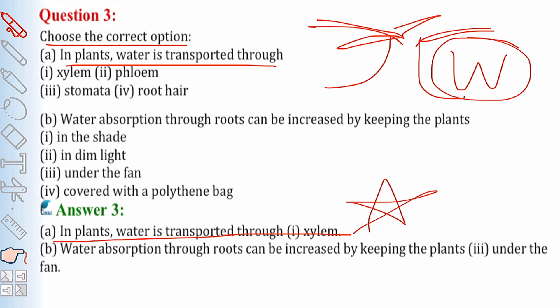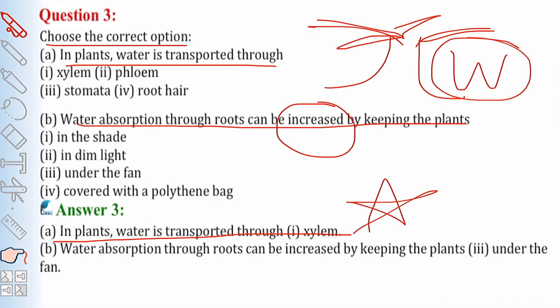Water absorption through roots can be increased by keeping the plants under a fan. When plants are placed under a fan, the rate of evaporation of water increases, resulting in a rapid increase in the process of transpiration. As water is lost faster, roots absorb water more quickly to compensate, increasing the speed of water absorption.